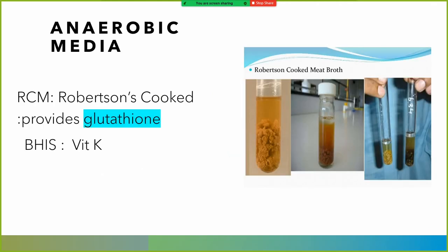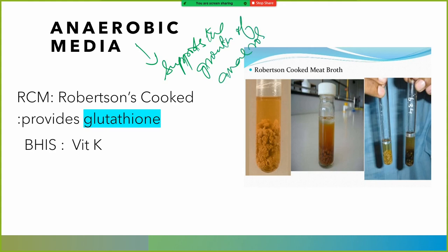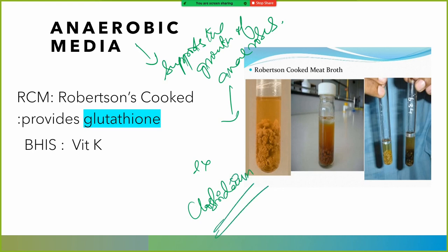Anaerobic media contains reducing substances that remove oxygen and create lower redox potential, thus permitting the growth of anaerobes such as Clostridium. Robertson's cooked meat medium provides glutathione, and DHIS medium supplies vitamin K.